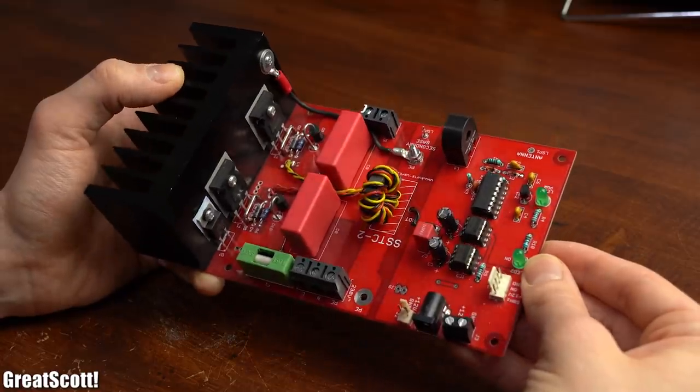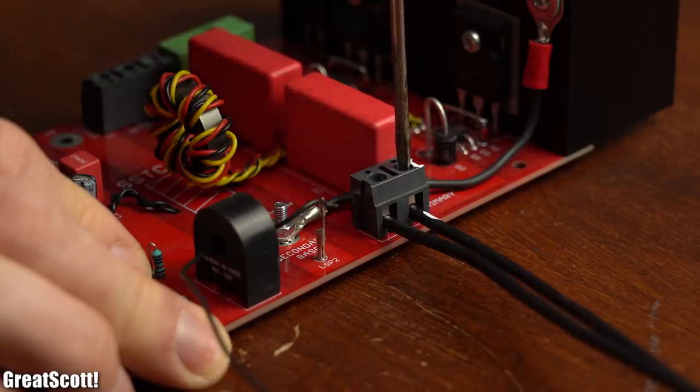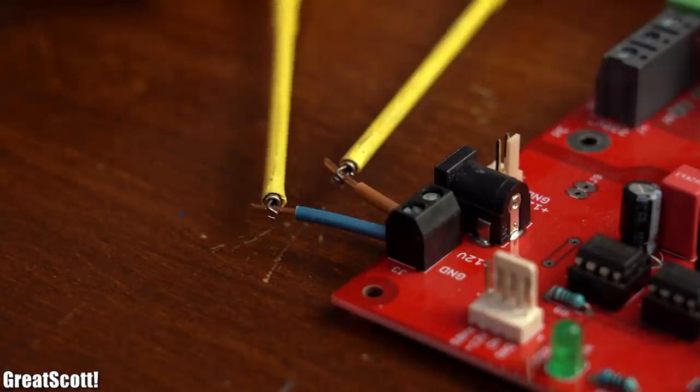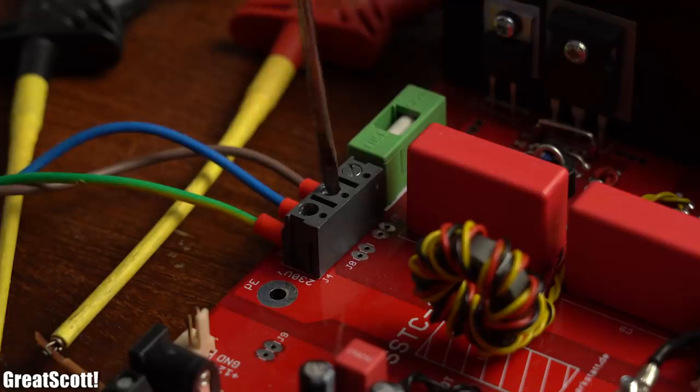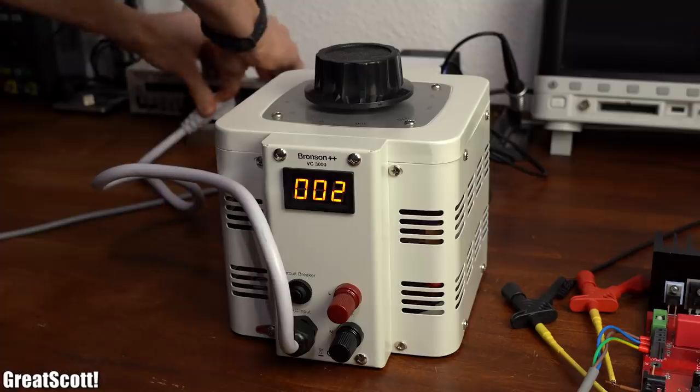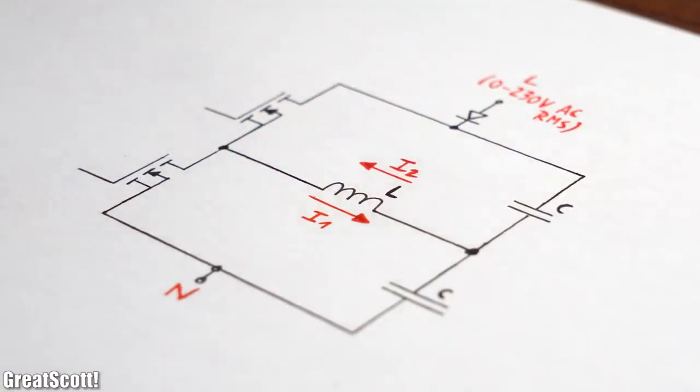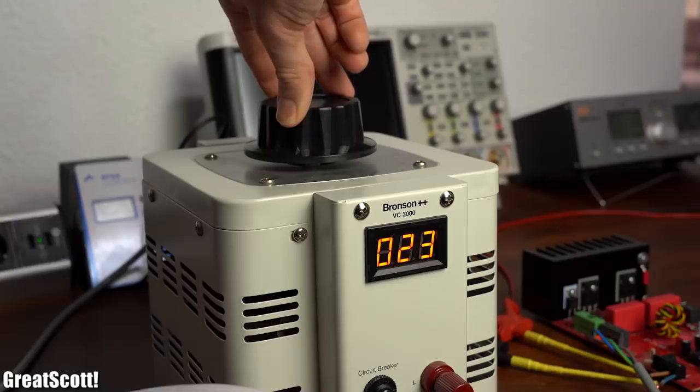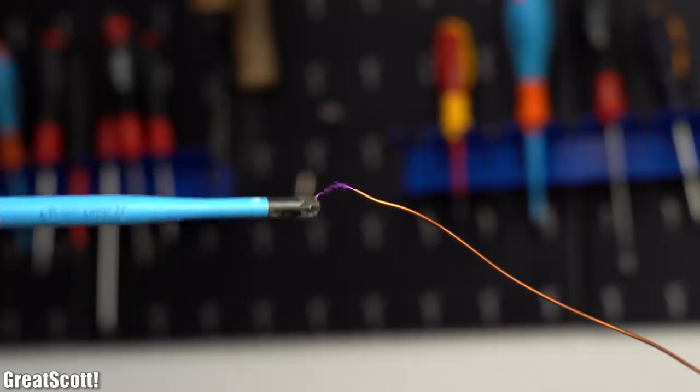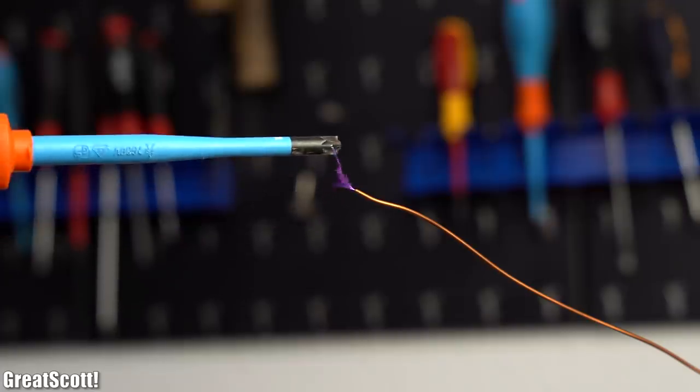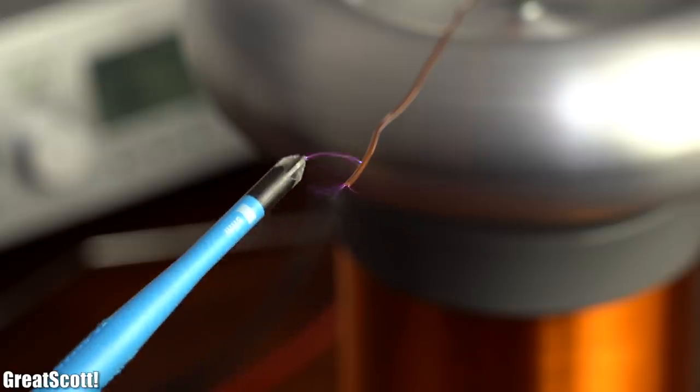After the circuit was done I assembled the Tesla coil, connected it to the PCB, used 12V of my lab bench power supply to power the control electronics and utilized a variable transformer to power the half bridge, aka the primary coil. And as you can see at an input voltage of merely 25V AC, the Tesla coil was already capable of creating pretty decent arcs which were more impressive than those of my old Tesla coil.